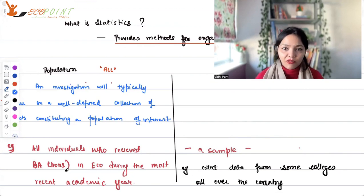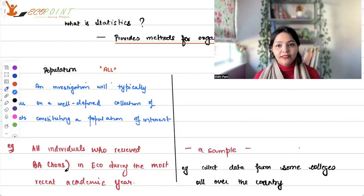But think about it. Is it possible for us to be able to get that data? It's difficult. It takes a lot of time, a lot of money. It takes a lot for a researcher to get data on the entire population.